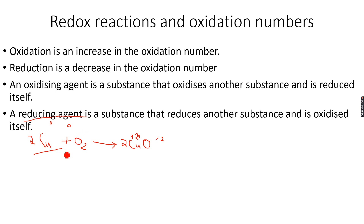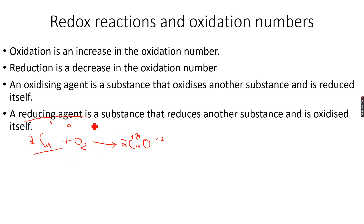Copper is the reducing agent because it reduces the oxygen it is reacting with, while itself getting oxidized. On the other hand, oxygen is the oxidizing agent because it oxidizes copper and is itself getting reduced. So copper is the reducing agent and O₂ is the oxidizing agent in this reaction.